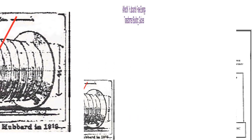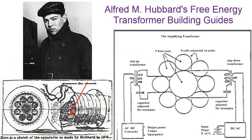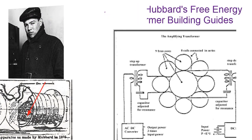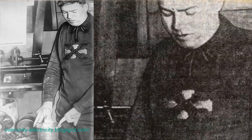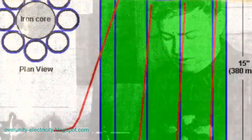In 1919, a young inventor named Alfred Hubbard made a groundbreaking discovery that could have revolutionized the way we produce energy.